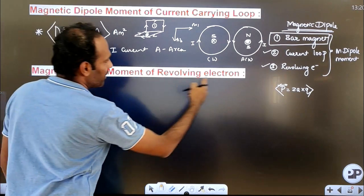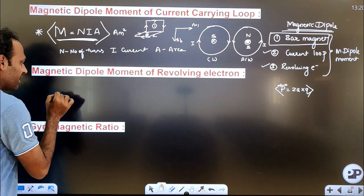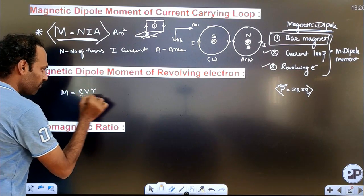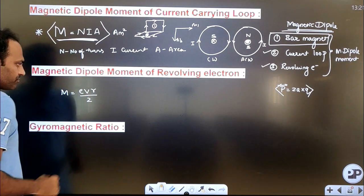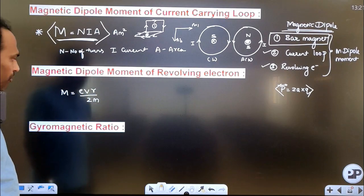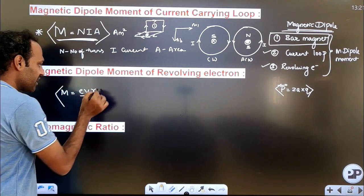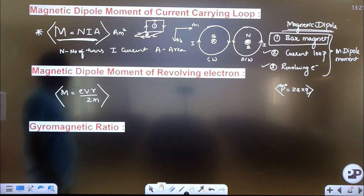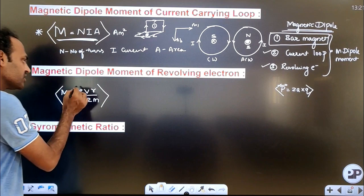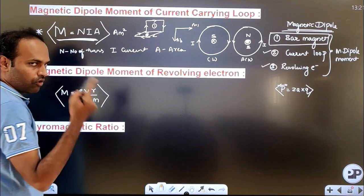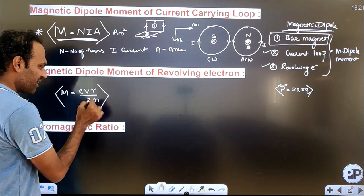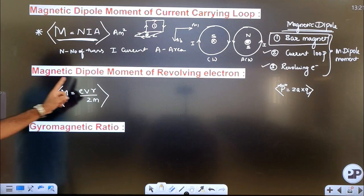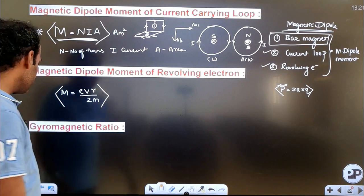Similarly, the magnetic dipole moment of a revolving electron is given by M = evr/2, where e is the charge of the electron, v is the orbital velocity, r is the radius of the circular orbit, and the factor of 2 comes from the derivation. This is the formula for the magnetic dipole moment of a revolving electron.